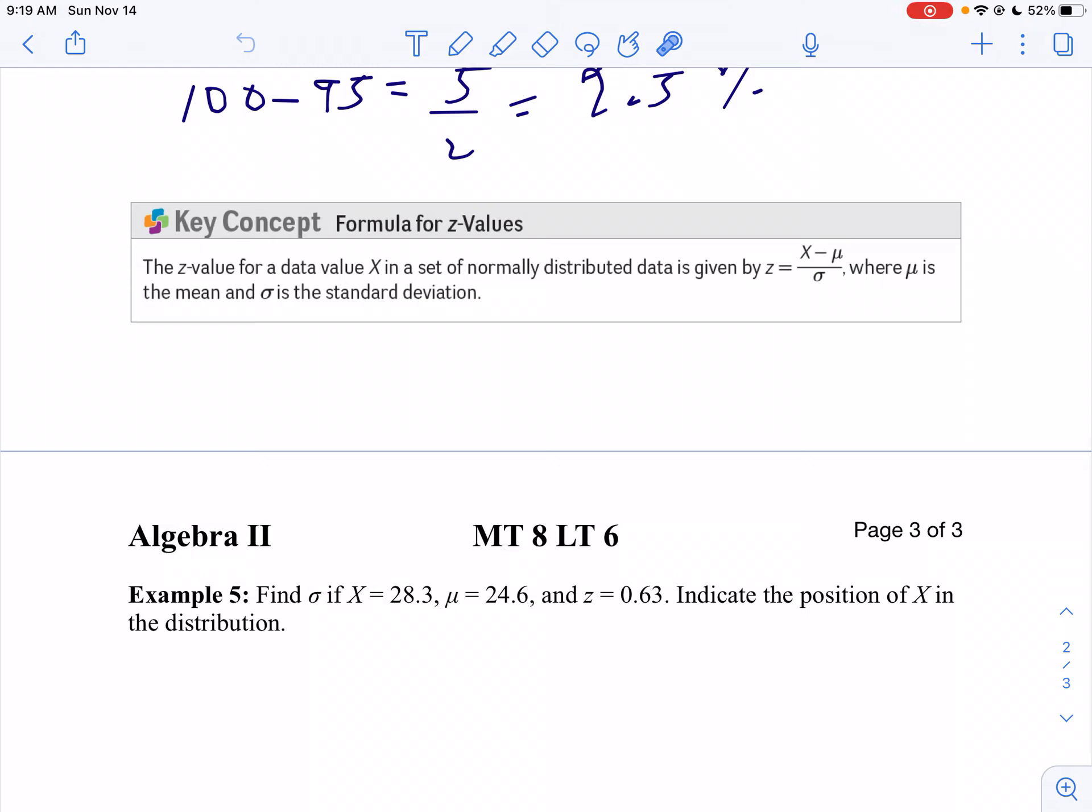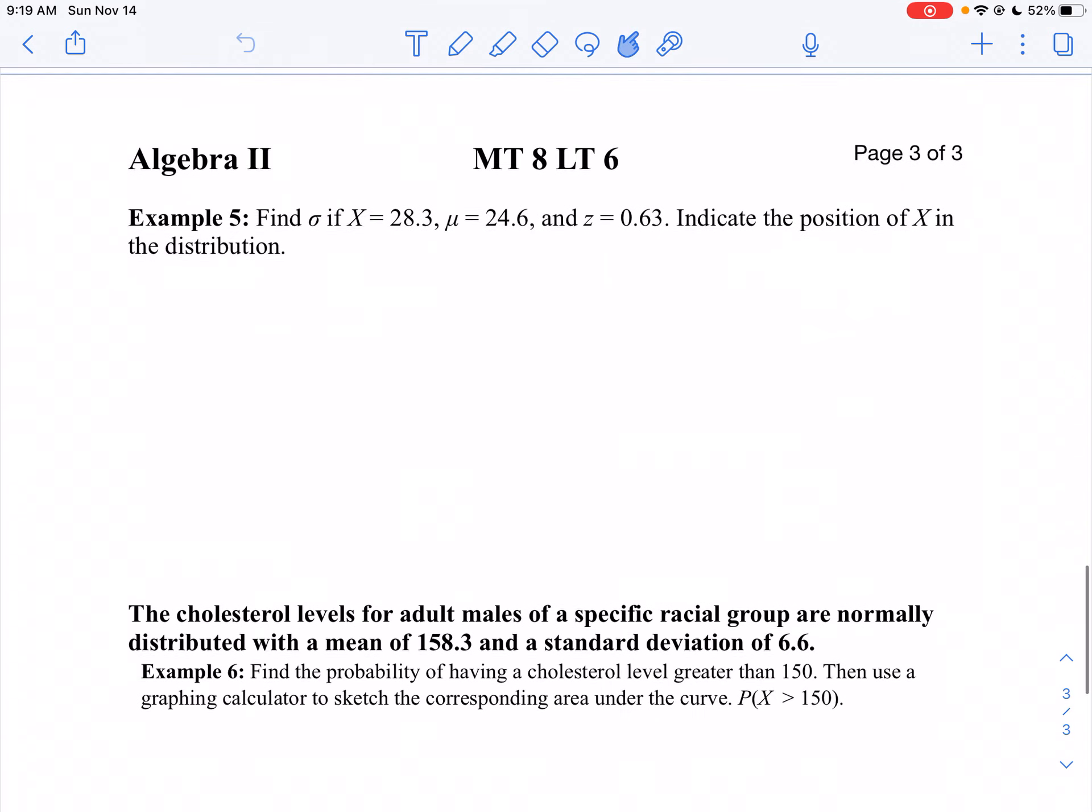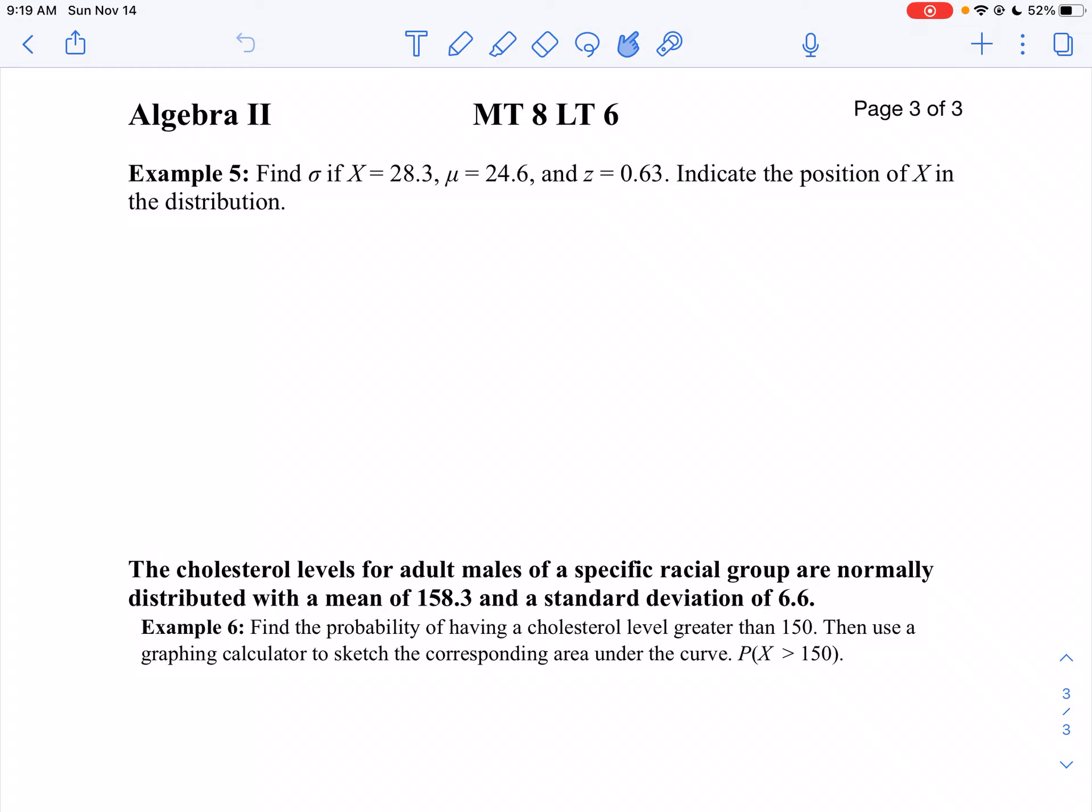It's our data point minus our mean divided by our standard deviation, and that gives us our z-score. Let's apply that on example 5 here. It says I want to find my standard deviation if x is 28.3, my mean is 24.6, and my z-score is 0.63.